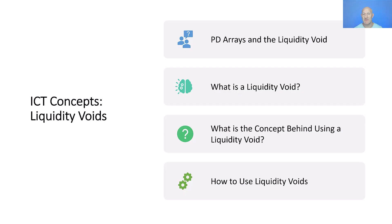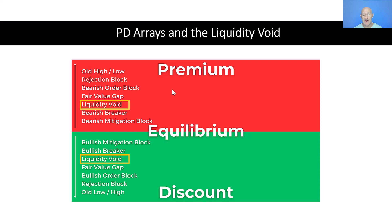Today's ICT concepts video is on liquidity voids. We'll start with PD arrays and the liquidity void, then go into what a liquidity void actually is, follow that up with the concepts behind using a liquidity void, and finish up by covering how we can use liquidity voids with some practical examples. A liquidity void is one of ICT's PD arrays. Above equilibrium we have our premium and below equilibrium we have our discount. So above equilibrium, in a premium, we have bearish liquidity voids, and below equilibrium in a discount, we have bullish liquidity voids.